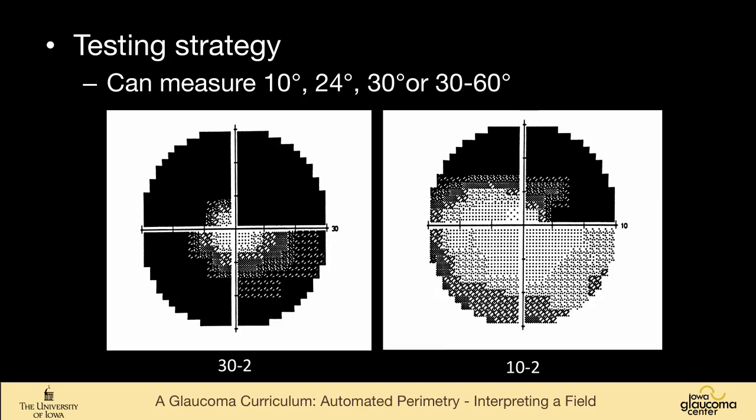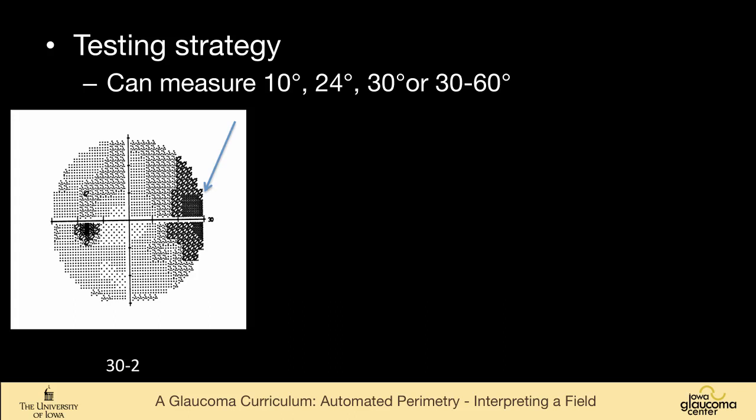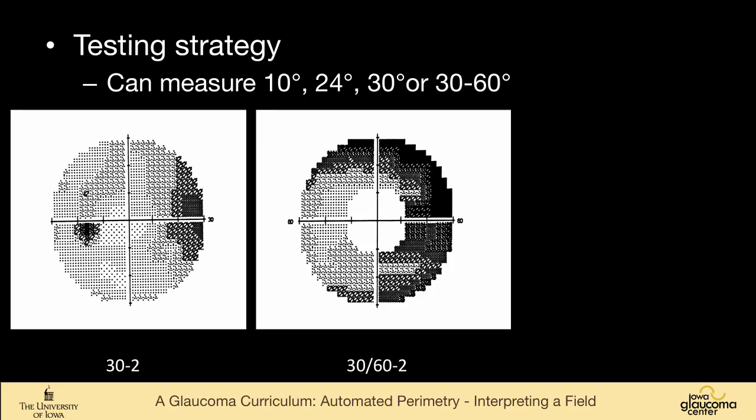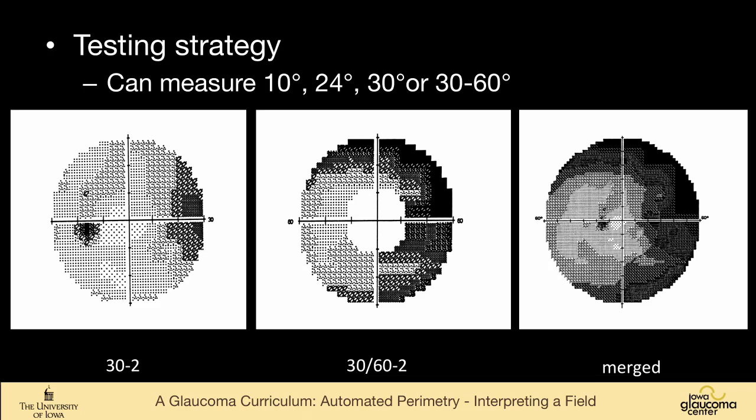If we have somebody where we're concerned about something in the periphery of the field, in our clinic, we would get a Goldmann field. But if you want to look farther out, you can do a 30-60-2 exam, and then you can merge those together. The automated perimeters are not great once you get outside of 24 or 30 degrees. There are a lot of issues with rim artifact, and also in a field like this, there's a tremendous amount of time for the patient to do this field. But you can take any fields and merge them to develop more of an area studied or a more dense coverage of an area of interest.